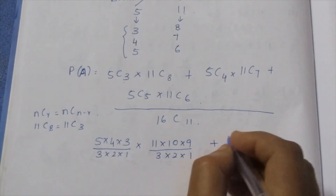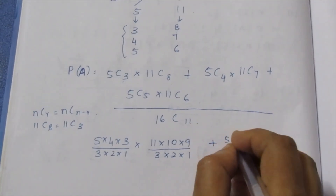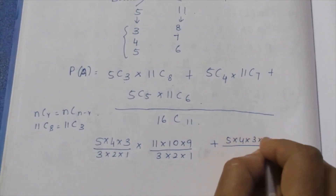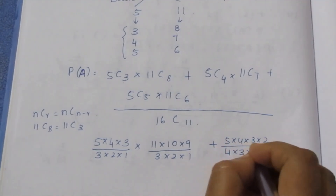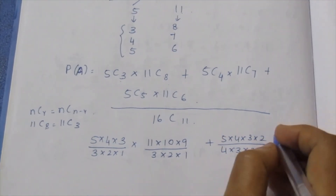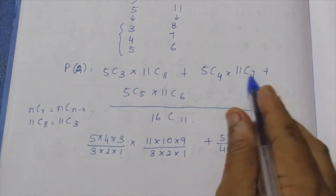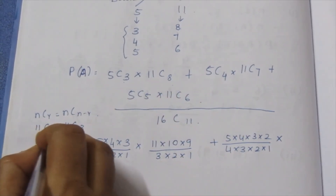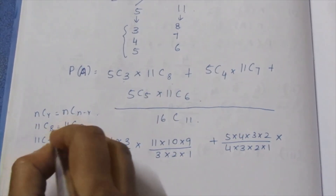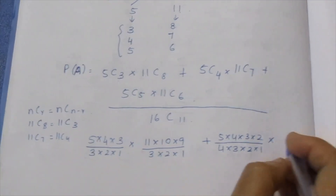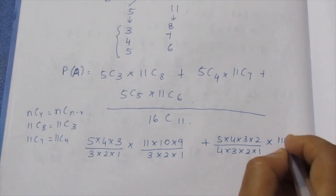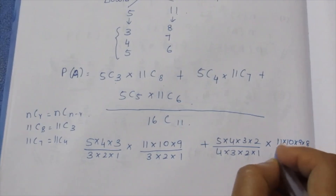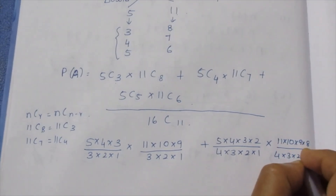Plus 5C4: 5 × 4 × 3 × 2 divided by 4 factorial, that is 4 × 3 × 2 × 1. Into 11C7, which equals 11C4, computed as 11 × 10 × 9 × ... divided by 4 factorial.